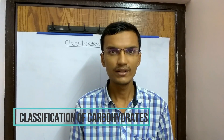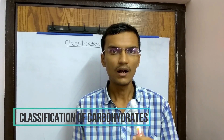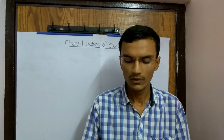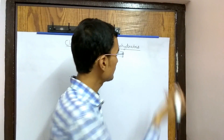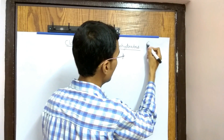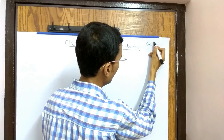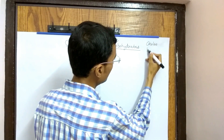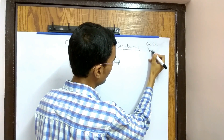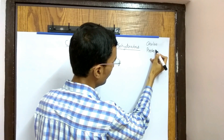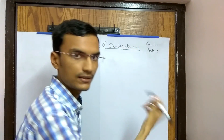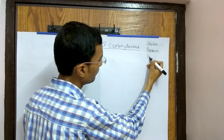Hello friends, in today's video I will talk about the classification of carbohydrates. There are mainly three components in our diet: first is carbohydrate, second is protein, and third is lipid.